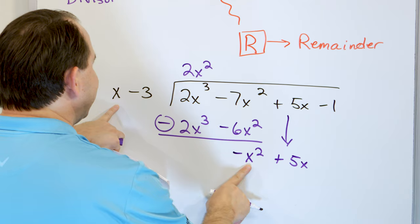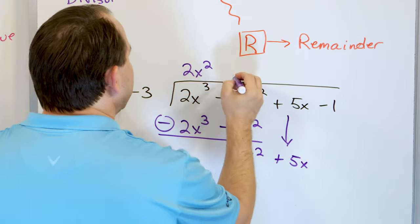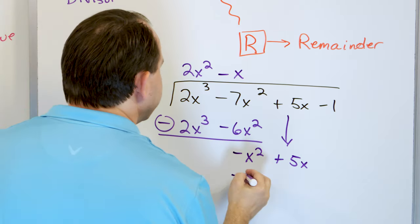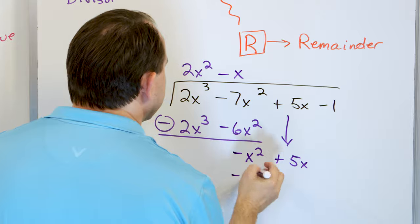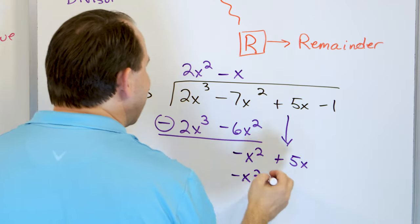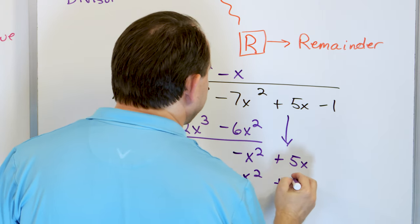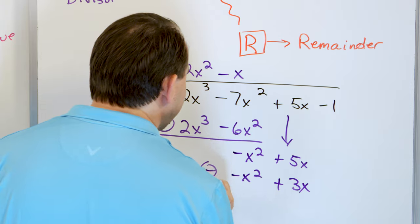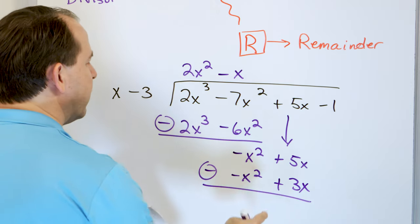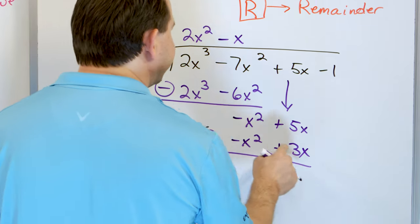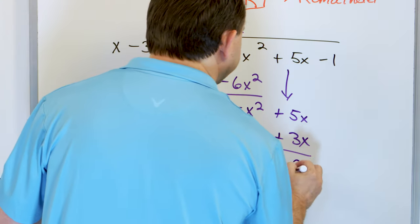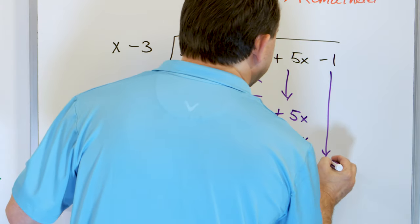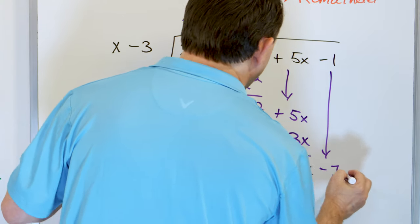Multiply here gives me negative x squared. Negative x times negative 3 gives me positive 3x. I subtract these two — they subtract to give me zero. 5 minus 3 gives me 2x. Then I have to drag my next term down, which is minus 1.